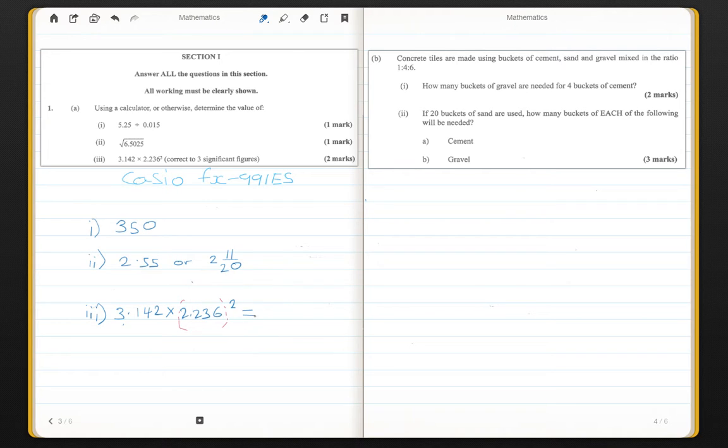Alright, so the answer for this now is 15.70904483. However, they only want it to 3 significant figures. So the 1, the 5 and the 7 are significant. Therefore, our final answer is 15.7. Okay? So that is it for question 1A.